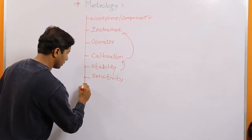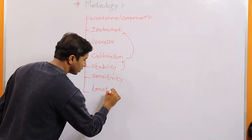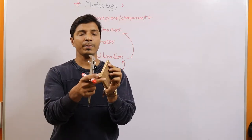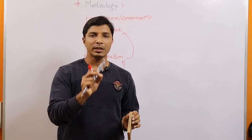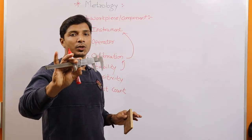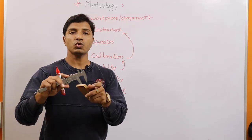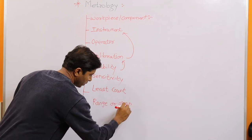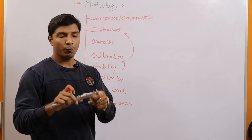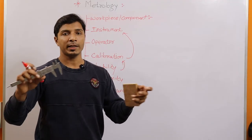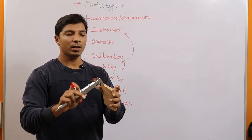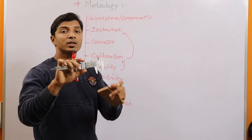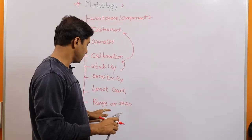The next parameter is least count, also called resolution. For example, if a side is exactly 10 mm but the instrument reads 10.001, that 0.001 is the least count — basically the accuracy at which the instrument can measure a dimension. The next parameter is range or span. This is the region for which the instrument is designed: the minimum and maximum value it can measure. For example, if an instrument measures from 10 mm to 100 mm, then 10 to 100 is its range or span.